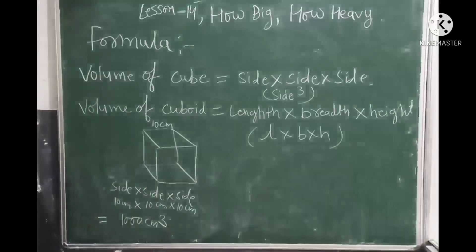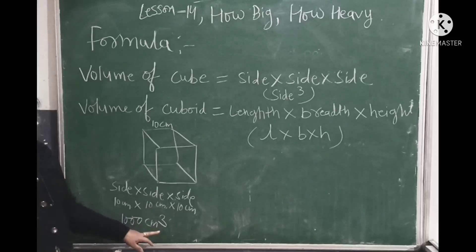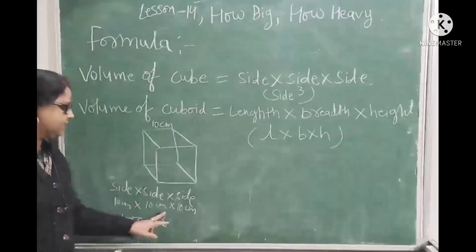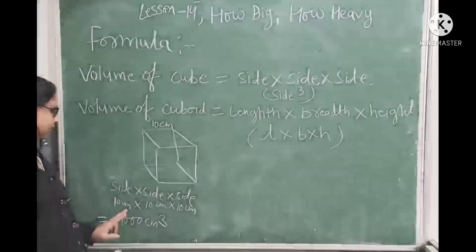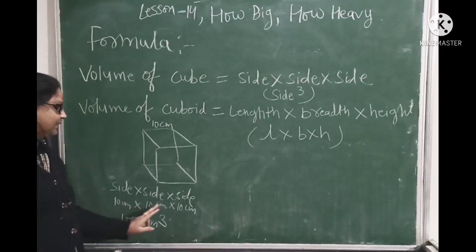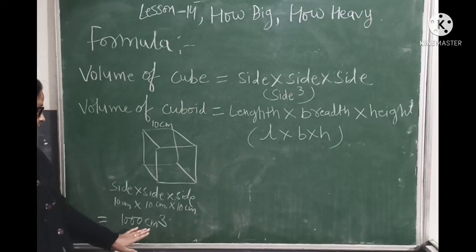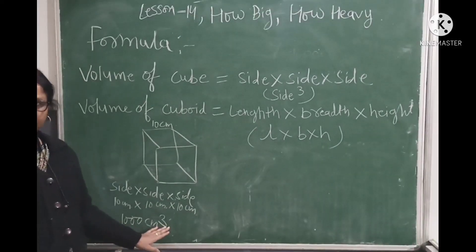We write the volume measuring unit as cm³ because we multiply cm three times — this cm, this cm, and this cm. We multiply it 3 times, so this measurement unit is cm³.